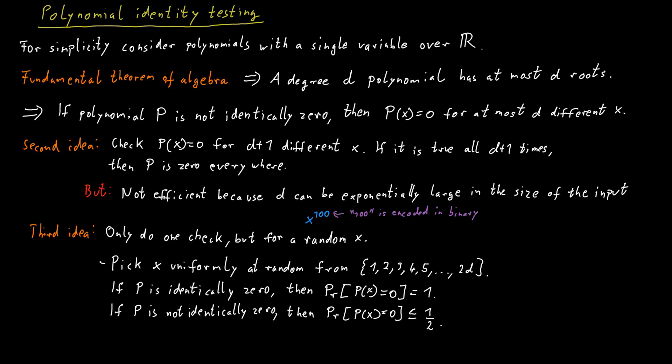But if the polynomial is not identically 0, what is the probability that it will evaluate to 0 anyway? At most one half, right? Because we know it can evaluate to 0 in at most d different locations. But we picked x as one value out of 2d many possible values.